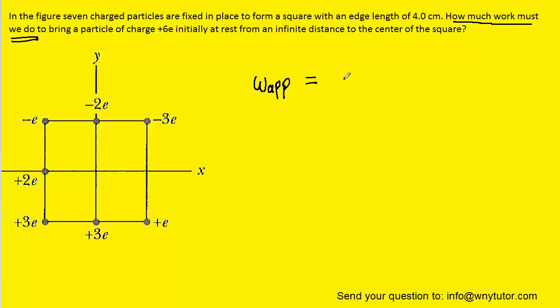We know from this chapter that the applied work is equal to the charge multiplied by the change in potential that occurs as we move the charge from infinity to the center of the square.